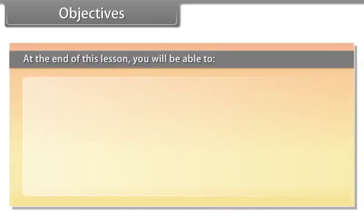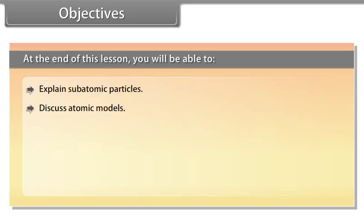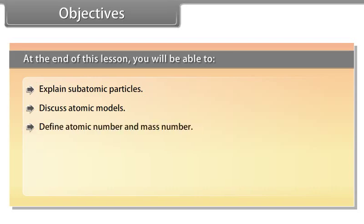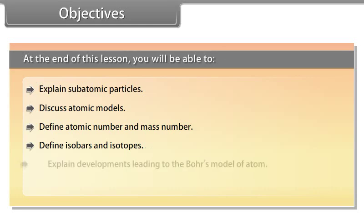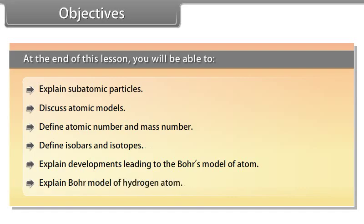At the end of this lesson, you will be able to: explain subatomic particles, discuss atomic models, define atomic number and mass number, define isobars and isotopes, explain developments leading to Bohr's model of atom, and explain the Bohr model of hydrogen atom.